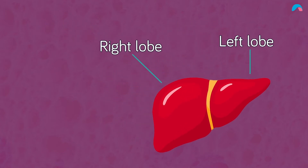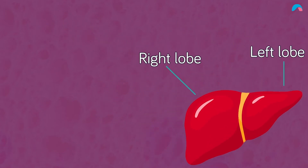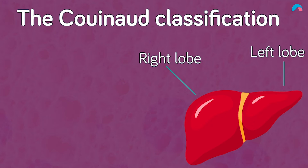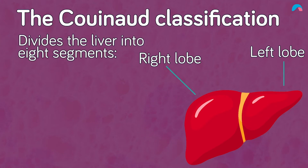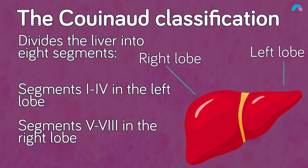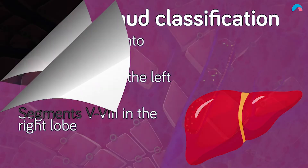A functional anatomy based on the blood vessels and bile ducts — the Couinaud classification — divides the liver into eight segments, made up of segments 1 to 4 in the left lobe and 5 to 8 in the right lobe.